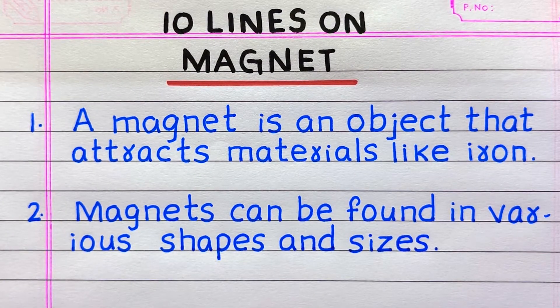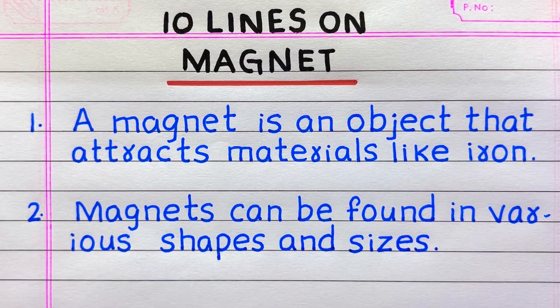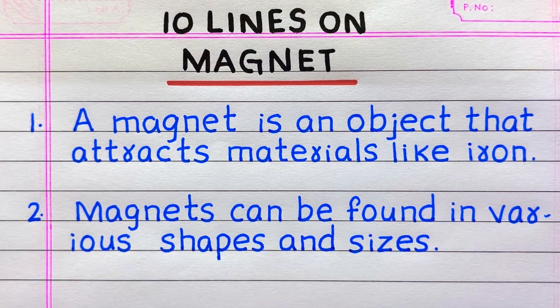Line 1. A magnet is an object that attracts materials like iron. Line 2. Magnets can be found in various shapes and sizes.